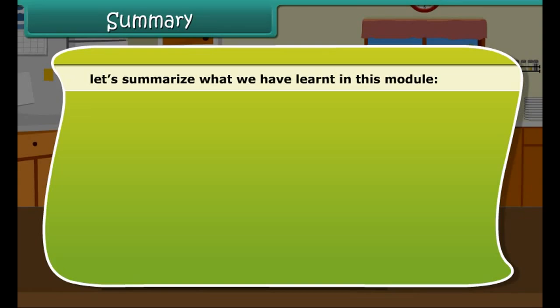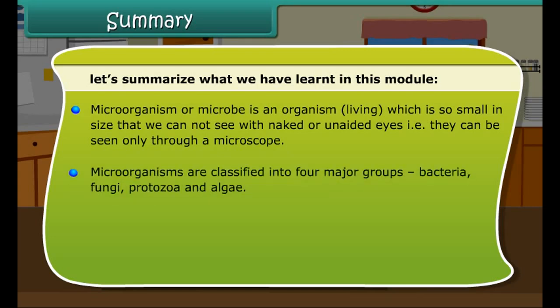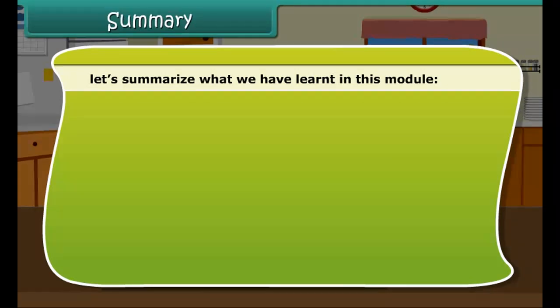Let us summarize what we have learned in this module. A microorganism or microbe is an organism so small in size that we cannot see it with naked or unaided eyes — they can be seen only through a microscope. Microorganisms are classified into four major groups: bacteria, fungi, protozoa, and algae. Microorganisms can survive in different environmental conditions like water, soil, hot springs, and mountains.